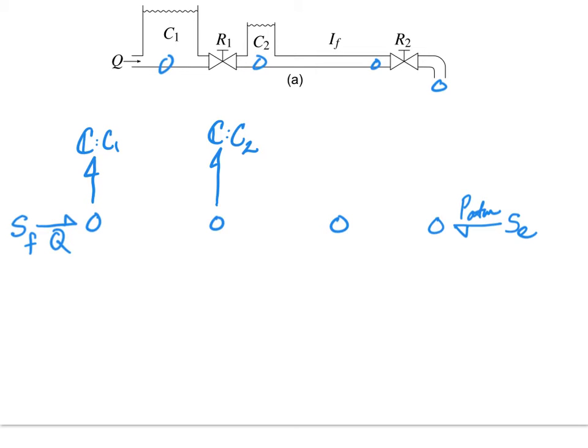At this point we can proceed to the next step which is to insert the one ports that exist between the pressure points. Between the first two pressures we have a valve.